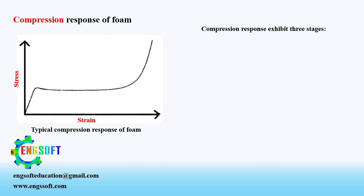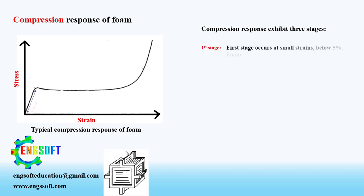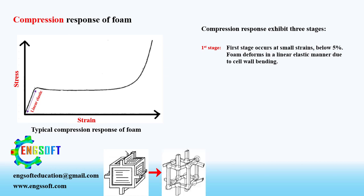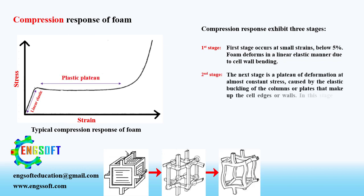Three stages can be highlighted during compression: linear elastic, plastic plateau, and densification. The first stage occurs at small strains, below 5%, where foam deforms in a linear elastic manner due to cell wall bending. The next stage is a plateau of deformation at almost constant stress, caused by the elastic buckling of the columns or plates that make up the cell edges or walls. In this stage, the volume is considerably reduced.